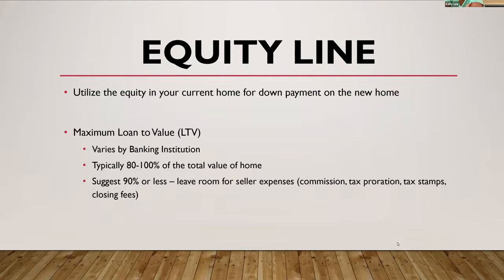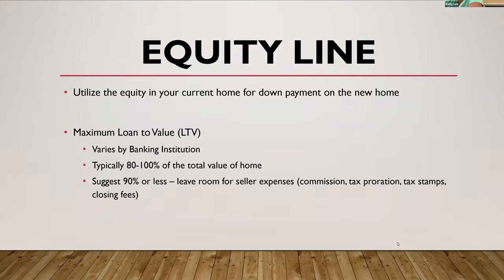There are some banks that will go up to 100%, but I'm not highly suggesting that, because obviously you've got a commission percentage to come out, tax prorations, tax stamps, etc. When I'm talking to a client, I'm suggesting they don't go anything more than about 90% so that they have plenty of money when they sell their house and they're not bringing money to closing — similar to what Leah mentioned with the bridge loan, where if a house goes down in value you don't want a seller to have to bring that money to closing.